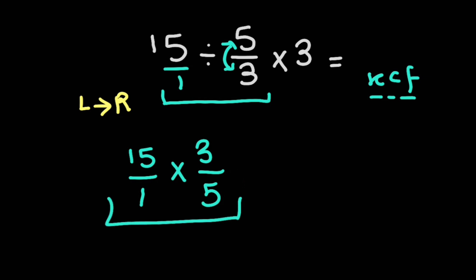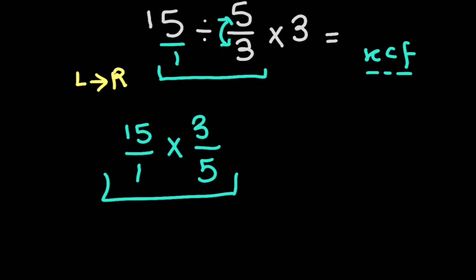Now we can simplify this expression: 5 divided by 5 gives us 1, 15 divided by 5 gives us 3, so 3 times 3 gives us 9. At the end we have times 3. Now the final answer is 27.